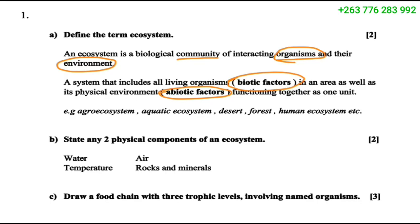Examples of ecosystems include an agro-ecosystem, an aquatic ecosystem such as a pond with various organisms, as well as desert, forest, and human ecosystems. Question two asks us to state the two physical components of an ecosystem.